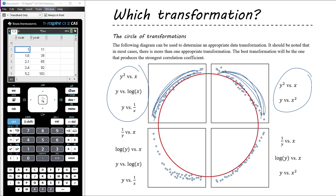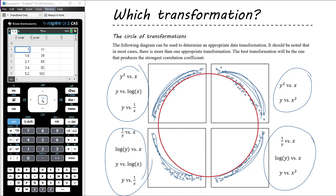We need a stretching transformation, not a compression, as that will only exacerbate the shape we're seeing — so either the squared transformation applied to the y variable or to the x variable. If our data curves the bottom-left way, the three options are: reciprocal transformation to the y variable, log transformation to the y variable, or squared transformation to the x variable. And if our data curves the bottom-right way, we have four options that may all linearize it — reciprocal to y, log to y, log to x, or reciprocal to x.